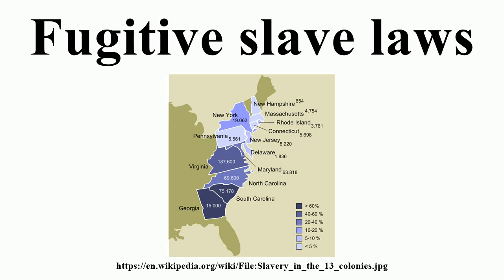The idea of the Fugitive Slave Law was derived from the Fugitive Slave Clause in the United States Constitution. It was thought that forcing states to deliver escaped slaves to slave owners violated states' rights due to state sovereignty, and it was believed that seizing state property should not be left up to the states. The Fugitive Slave Clause states that escaped slaves shall be delivered up on claim of the party to whom such service or labor may be due, which abridged state rights because retrieving slaves was a form of retrieving private property.